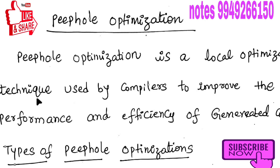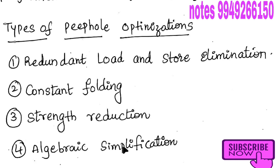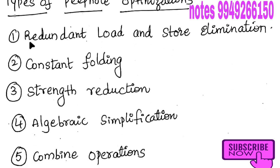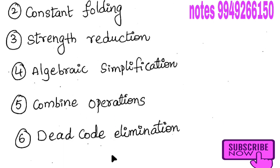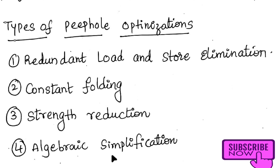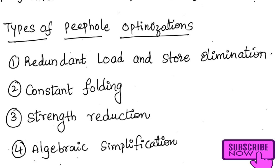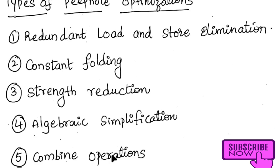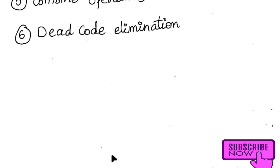Now we'll see what are the types of peephole optimization techniques — this is one of the important questions. The types are: first, redundant load and store elimination; second, constant folding; third, strength reduction; fourth, algebraic simplification; fifth, combined operations; sixth, dead code elimination. Remember, there are six types in total. We'll see them one by one.